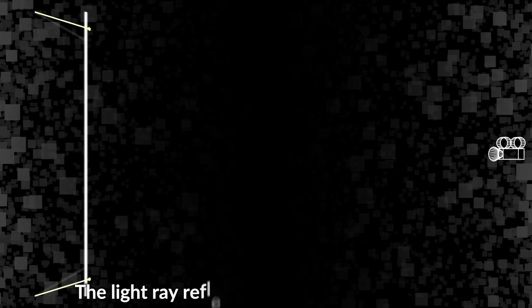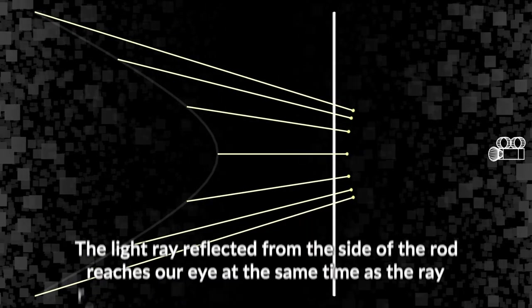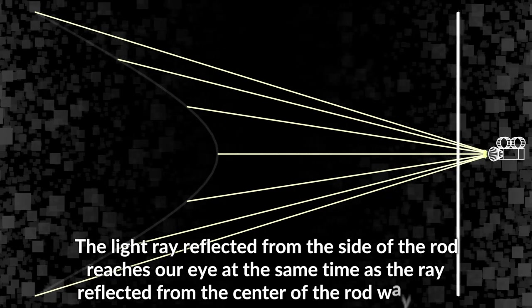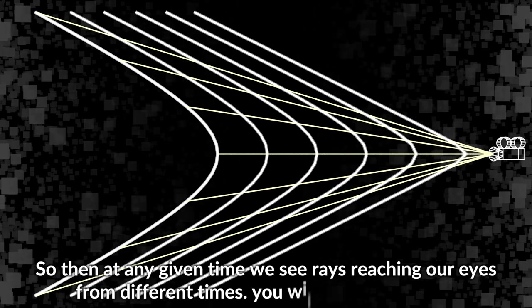Let's look closer at this simple example: the light ray reflected from the side of the rod reaches our eye at the same time as the ray reflected from the center of the rod way later. So then at any given time we see rays reaching our eyes from different times. You will see the rod bent.